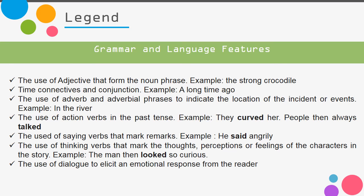Now let's talk about the grammar and language features of legend. First is the use of adjectives that form noun phrases — for example, 'the strong crocodile': 'strong' is the adjective, 'crocodile' is the noun, and 'strong crocodile' is the noun phrase.